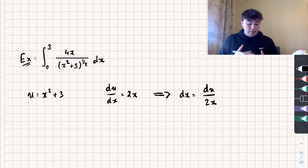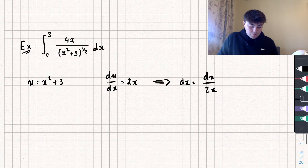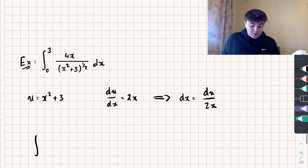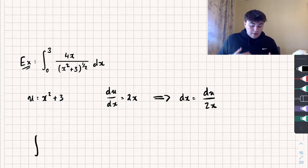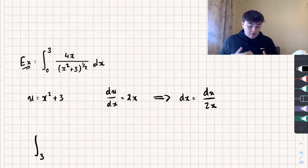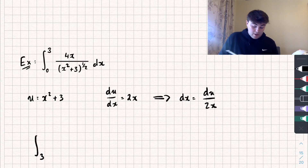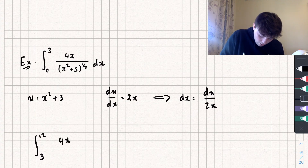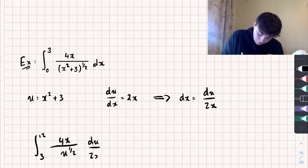Now I'll substitute everything in and change the limits. When x is 0, u equals 0 squared plus 3, which is 3. When x is equal to 3, u equals 3 squared plus 3 — that's 9 plus 3 equals 12. Substituting the rest in, we have 4x divided by u to the power of a half with respect to u, divided by 2x. The x's cancel, and we have 4 divided by 2, which gives us a constant of 2.